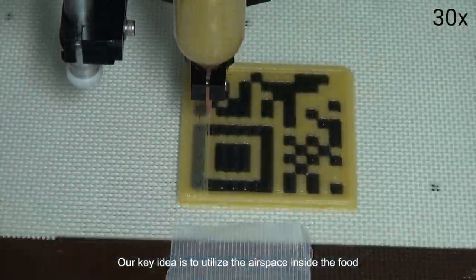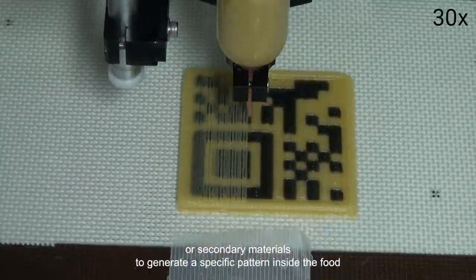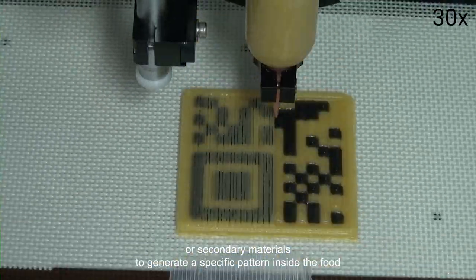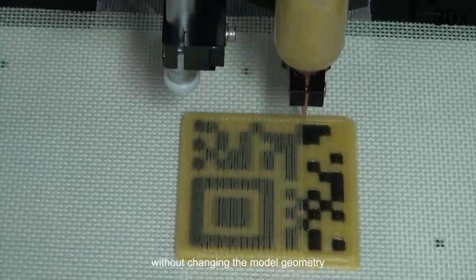Our key idea is to utilize the airspace inside the food or secondary materials to generate a specific pattern inside the food without changing the model geometry.